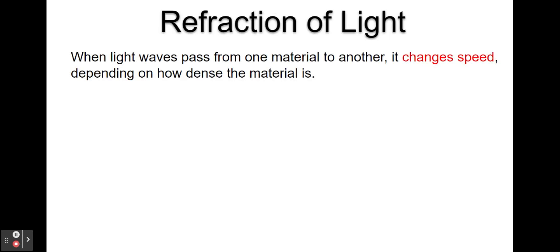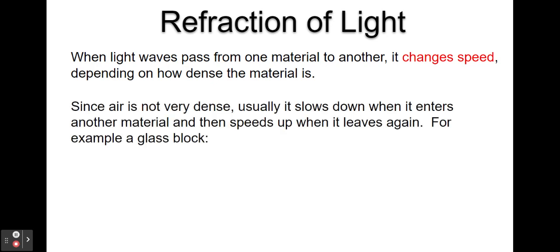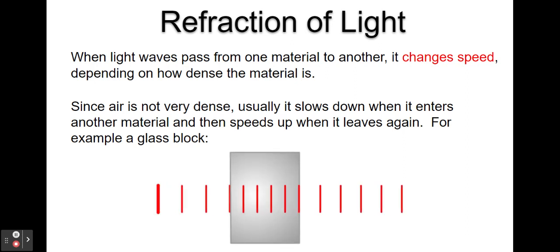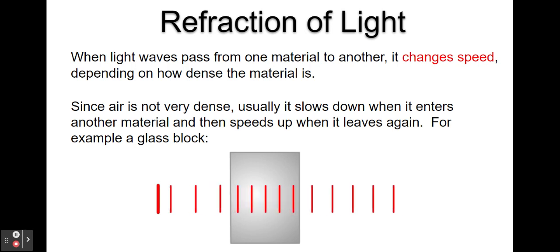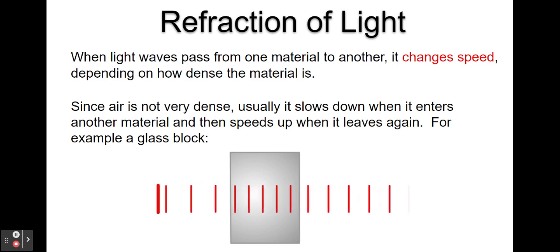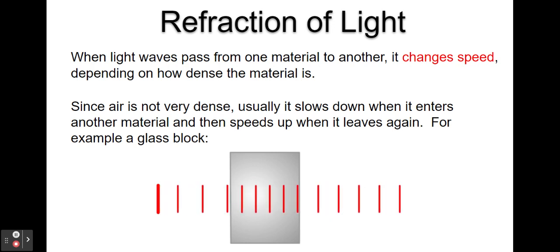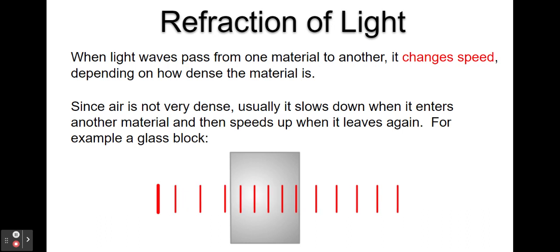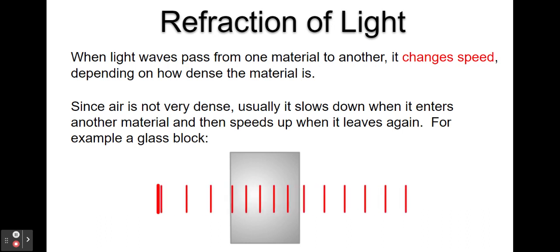When light passes from one material to another it changes speed depending on how dense the material is. Since air is not very dense, it will usually slow down when it enters another material and speed up when it leaves again. For example, a glass block like this. These red lines represent the wavefronts of a light wave as it enters the glass block and then leaves — slowing down as they enter and speeding back up as they leave.